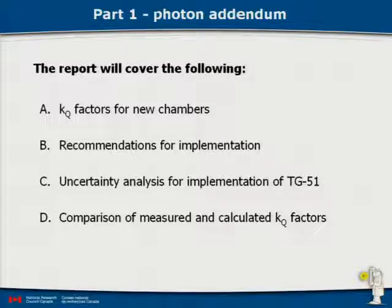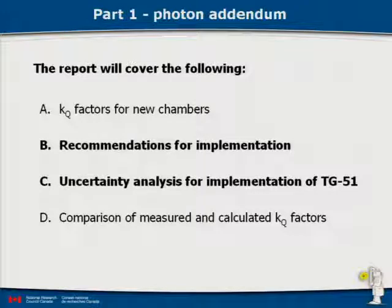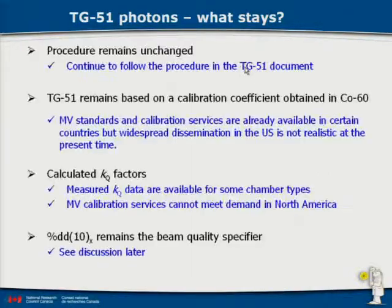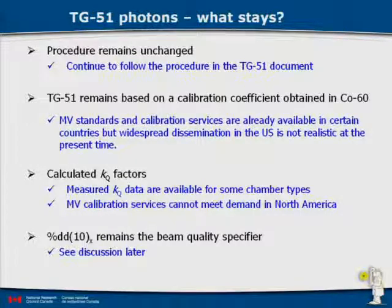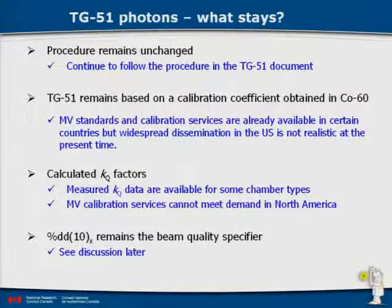For this presentation, I'm going to look at the recommendations for implementation and the uncertainty analysis, as those are the ones you'll be most interested in. Just to be clear about what stays with TG51: the procedure remains unchanged. It remains based on a calibration coefficient in cobalt-60. The ADCL operation won't change — they'll still provide a calibration coefficient in cobalt-60. Some laboratories, including the NRC in Canada, can provide MV calibrations, but the effort required for 1,500 clinics isn't really there. We'll continue using calculated KQ factors, and DD10 will remain the beam quality specifier.